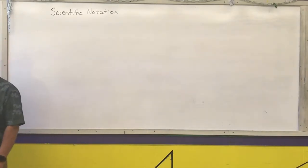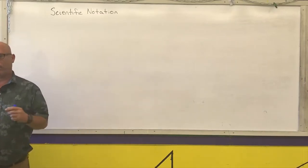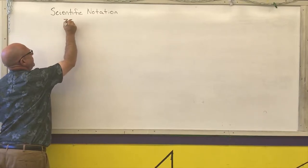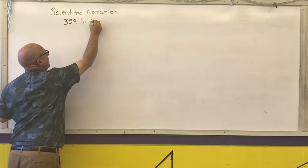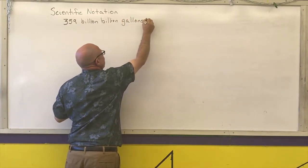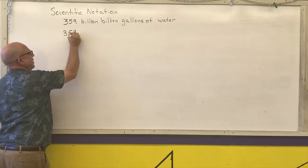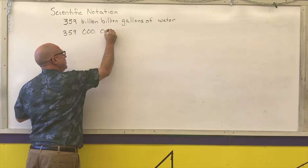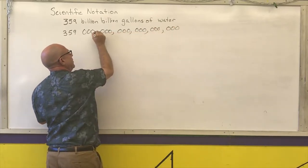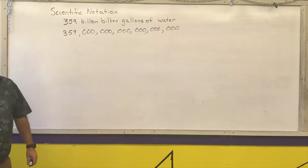Scientific notation is a way to write very, very large numbers or very, very small numbers without adding a lot of extra zeros either before or after a decimal point. For example, on Earth, there is 359 billion billion gallons of water. Well, that's a big way to write it, so they came up with scientific notation.